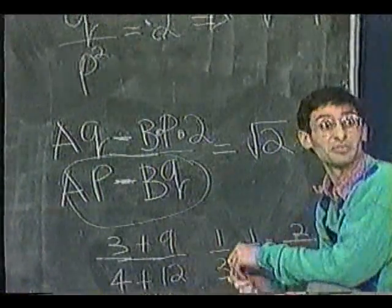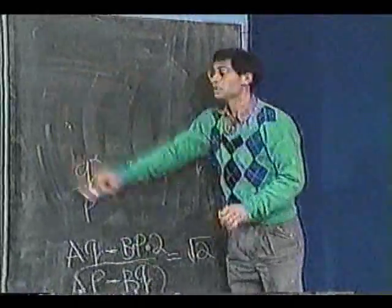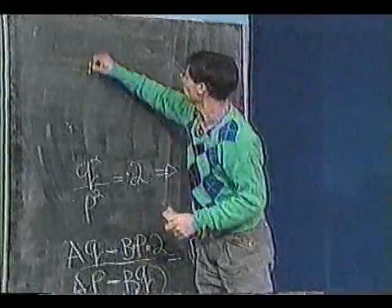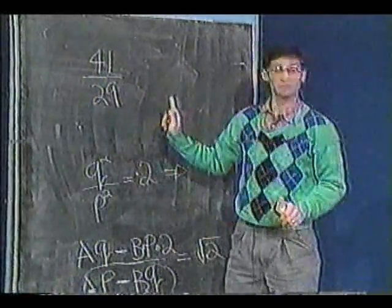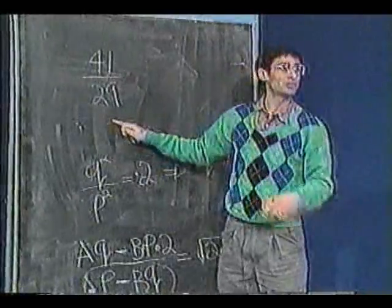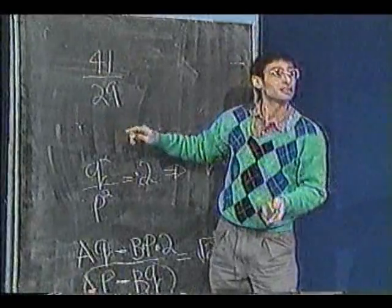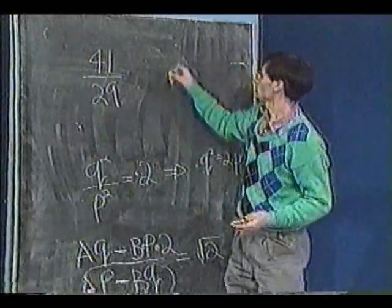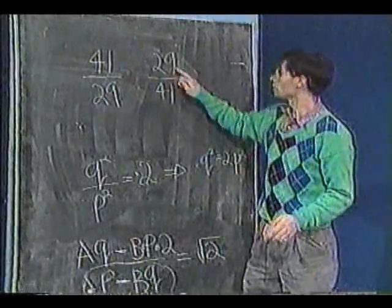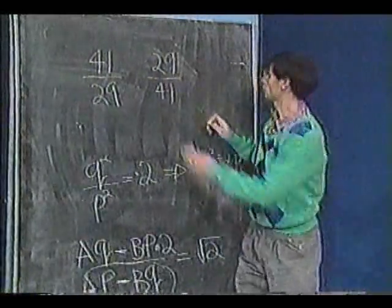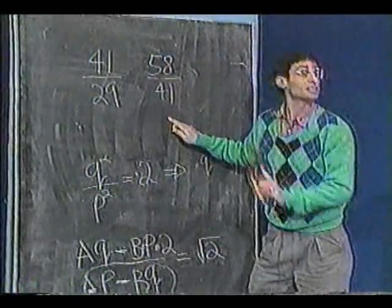Let me illustrate numerically what I mean by this. We'll go to the top of the board. Suppose I had 41 over 29, which is a pretty good approximation of the square root of 2, but let's say we thought it was exactly the square root of 2. Then if we took the reciprocal of it, 29 over 41, and multiplied it by 2, that would give me 58 over 41, this should also be exactly the square root of 2.